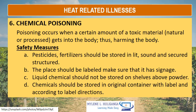Chemical poisoning. Poisoning occurs when a certain amount of toxic material, even though it is natural or processed, gets into the body, thus harming the body. Safety measures: pesticides and fertilizers should be stored in a lit, sound, and secure structure. The place should be labeled — make sure that it has signage. Liquid chemicals should not be stored on shelves above powder. Chemicals should be stored in their original container with label and according to label directions.